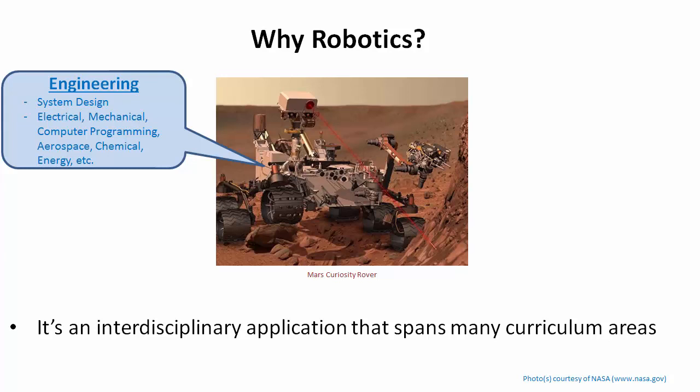You also have other engineering disciplines that interact with robots, such as aerospace engineering. Robotics are used for interplanetary exploration. What we're looking at right now is the Mars Curiosity Rover exploring the surface of Mars. There are many aspects to consider when thinking about robotics in space. You also have chemical and energy — the batteries that run the robotics — and nuclear engineering. Engineering is really a great discipline that spans all aspects of robotics.